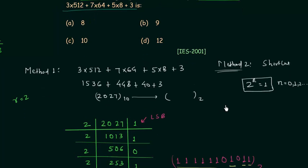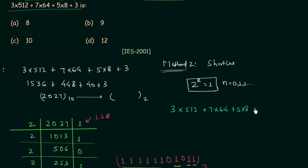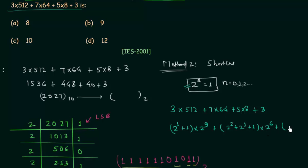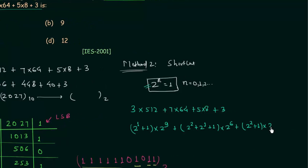We have 3 multiplied by 512, plus 7 multiplied by 64, plus 5 multiplied by 8. 3 can be written as 2 raised to power 1 plus 1, and 512 is 2 raised to power 9. 7 can be written as 2 raised to power 2 plus 2 raised to power 1 plus 1, and 64 is 2 raised to power 6. 5 can be written as 2 raised to power 2 plus 1, and 8 is 2 raised to power 3. 3 can be written as 2 raised to power 2 plus 1.